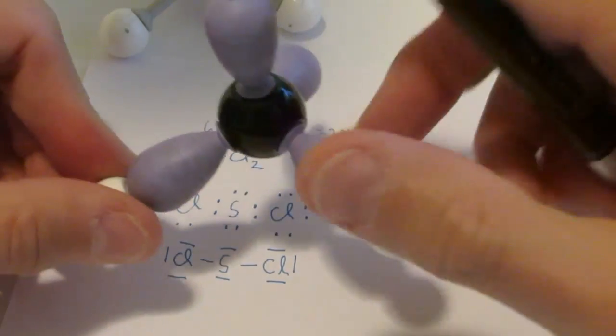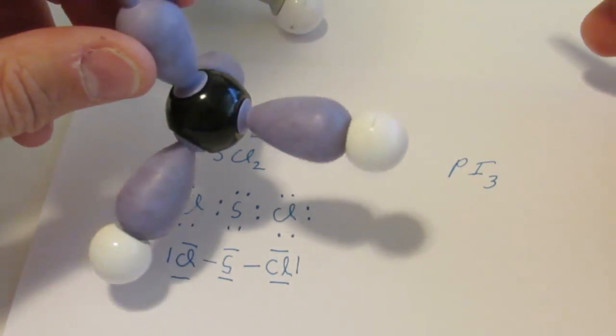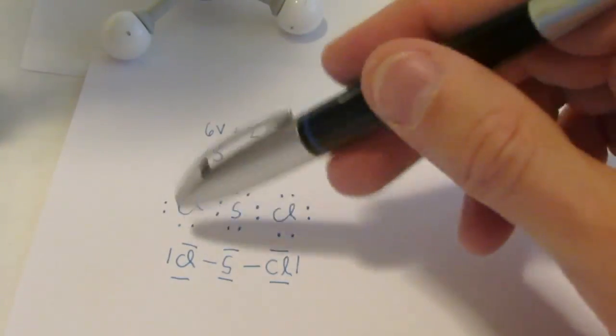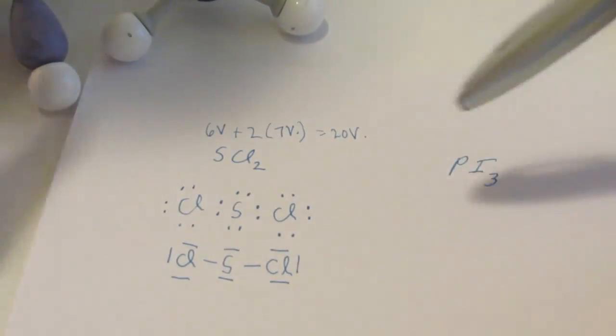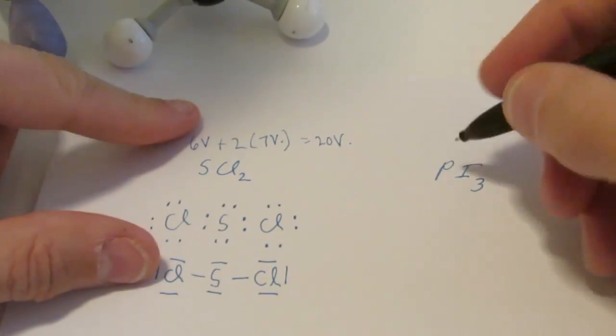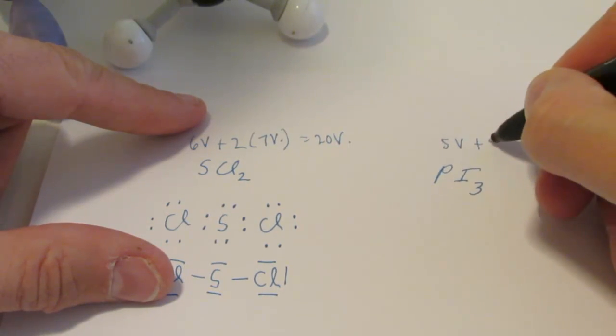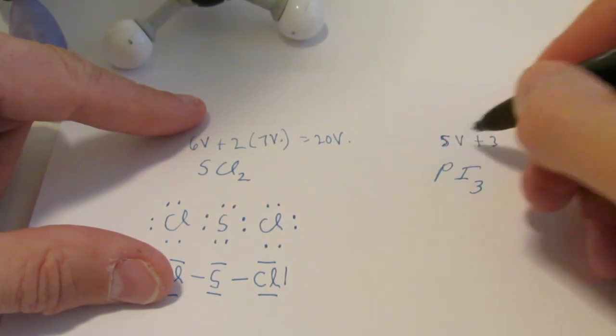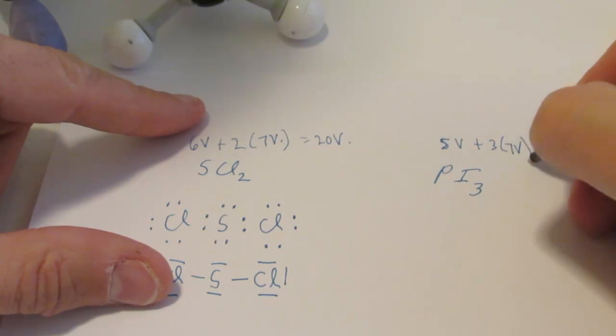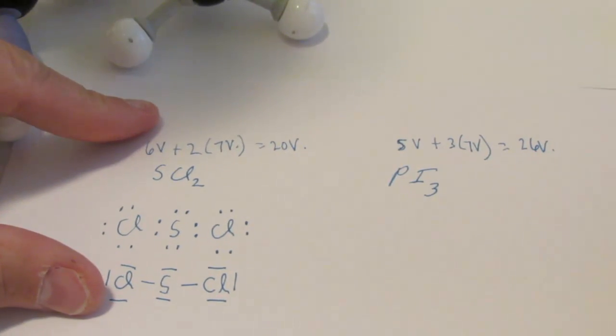That's getting into a lecture you guys will hear in class. Right now you just need to really concentrate on how to draw the Lewis structures. Let's try PI3. Phosphorus is in group 15, it has 5 valence. Each iodine is in group 7, it has 7 valence. So we have 26 valence electrons to work with here.